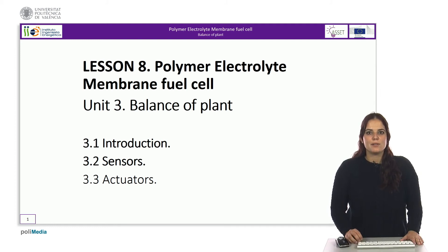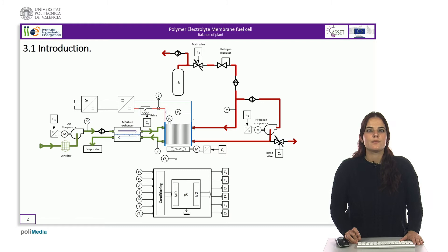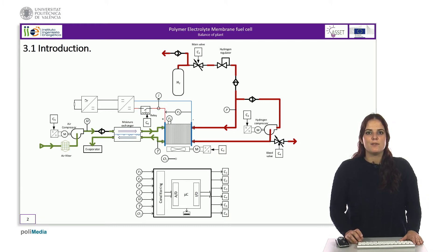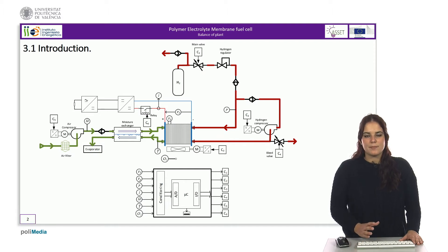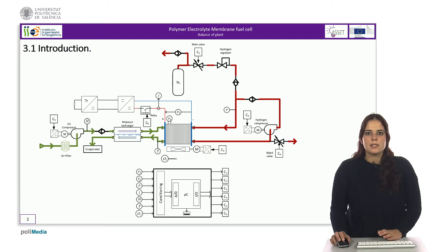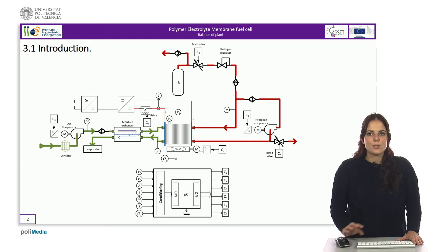Hello and welcome to the first part of the unit 'Balance of Plant,' where we will discuss the different sensors necessary for the appropriate operation of a PEM fuel cell plant. In PEM fuel cells, the electrochemical conversion in the stack is fundamental for the generation of electrical energy. However, for this conversion to take place, it is necessary to add a series of systems that guarantee the good operation of the stack. The set of all these subsystems is what is known as the balance of plant. In this unit we will describe each of the elements that make it up and the selection criteria.